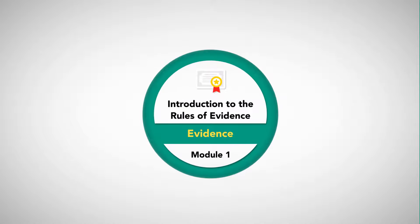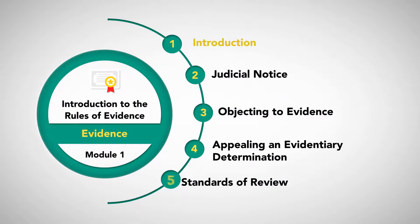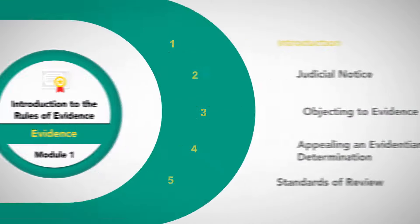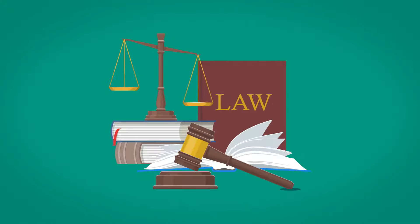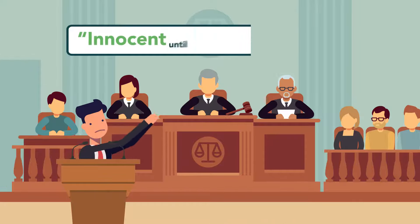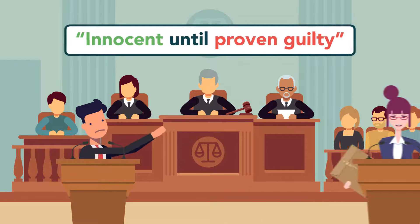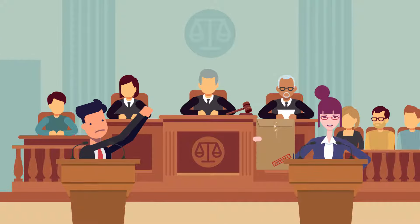Module 1: Introduction to the Rules of Evidence. One of the cornerstones of the United States criminal justice system is the principle that every person is innocent until proven guilty. The tool by which guilt is proven is evidence.